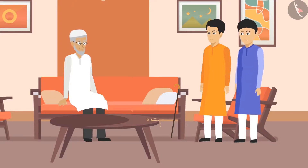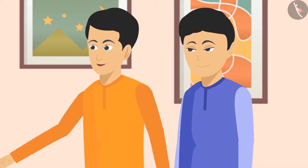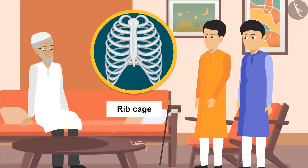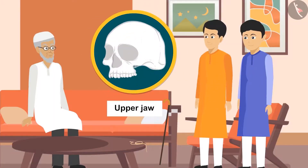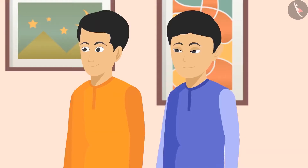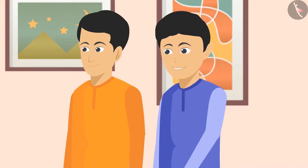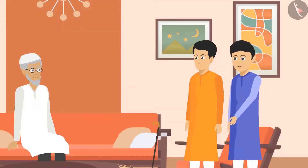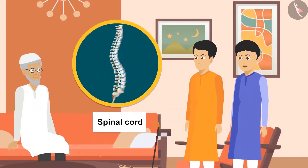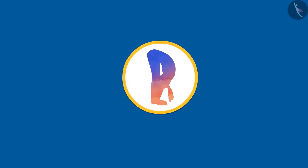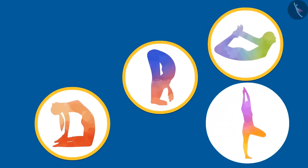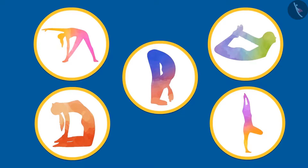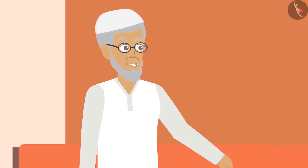'But Chacha ji, every joint is not for movement — there are some joints which are there for strength only. A rib cage and our upper jaw are made up of such joints.' 'Chacha ji, if we notice, the bones and joints make the most flexible structure of our body — it is the spinal cord. Look how we can bend forward and touch the ground. If we practice regularly, we can also touch the ground by bending backwards, and to some extent we can bend sideways.' 'Well done, students! You kids have studied in a proper way.'